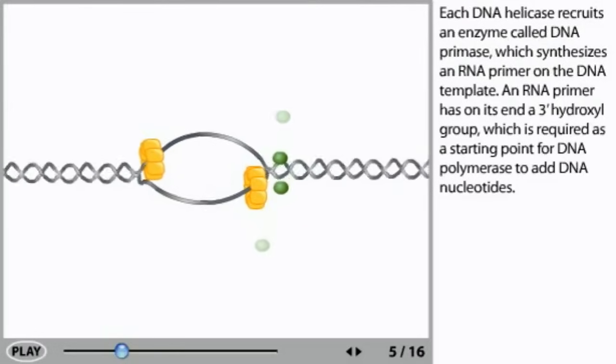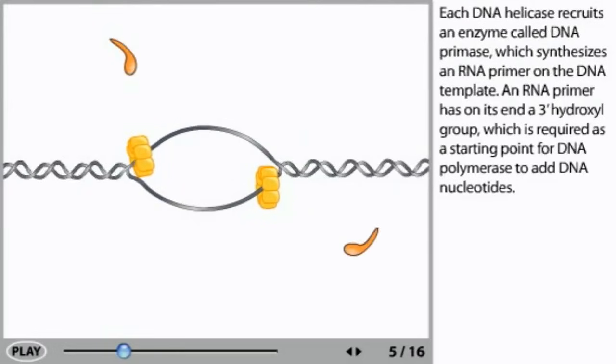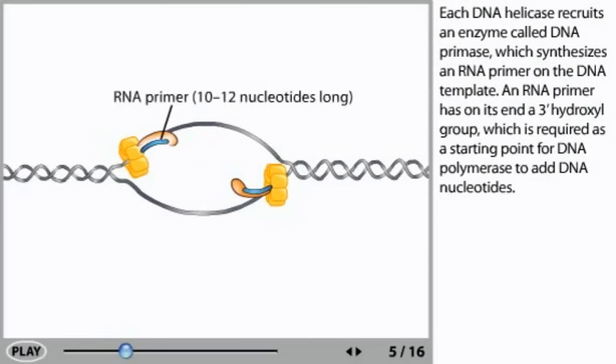Each DNA helicase recruits an enzyme called DNA primase, which synthesizes an RNA primer on the DNA template. An RNA primer has on its end a 3' hydroxyl group, which is required as a starting point for DNA polymerase to add DNA nucleotides.